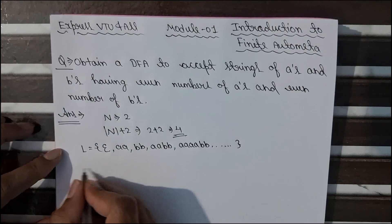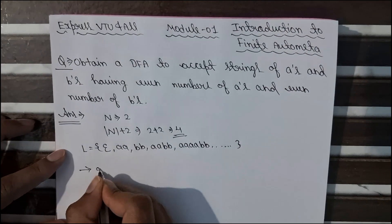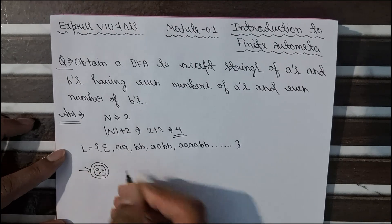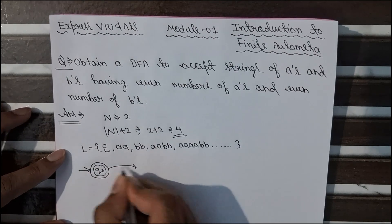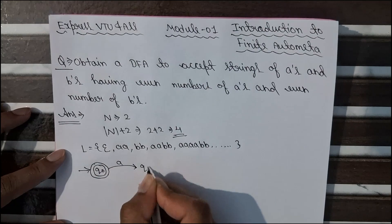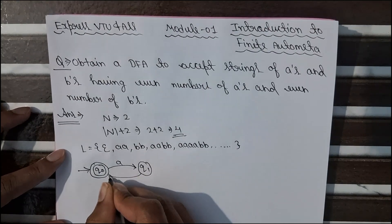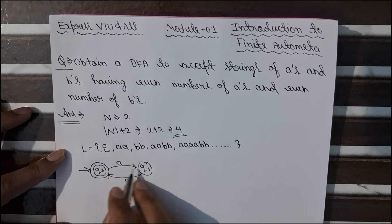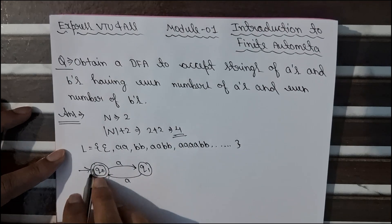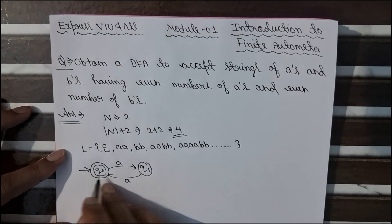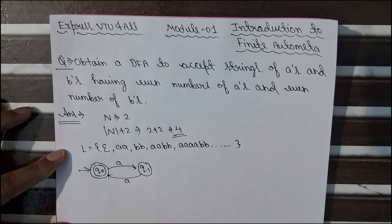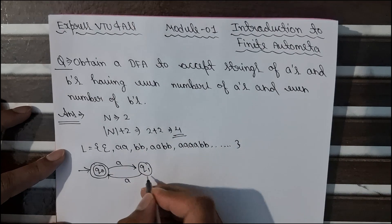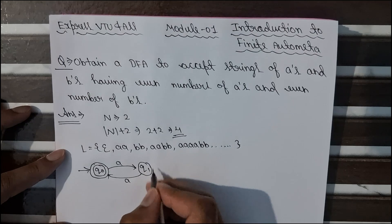We will start from state Q0, making Q0 the final state. With input symbol A it goes to Q1, and from Q1 with input symbol A it goes back to Q0. So with two A's, an even number of A's are accepted. This satisfies our condition. If only one A is input, we reach Q1, which is not a final state, so it is not accepted.